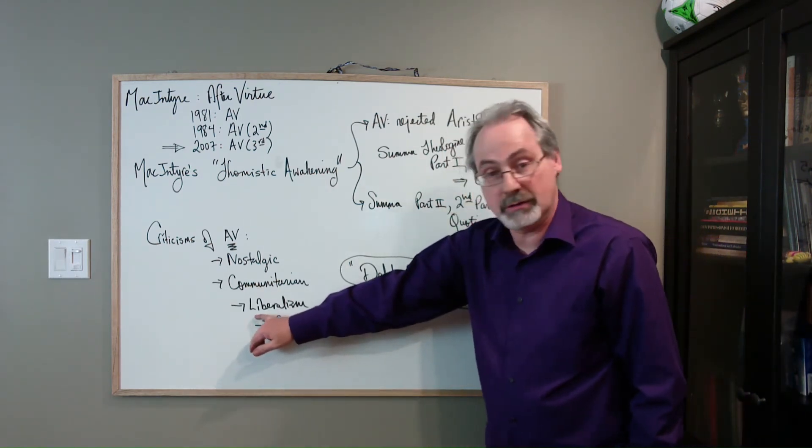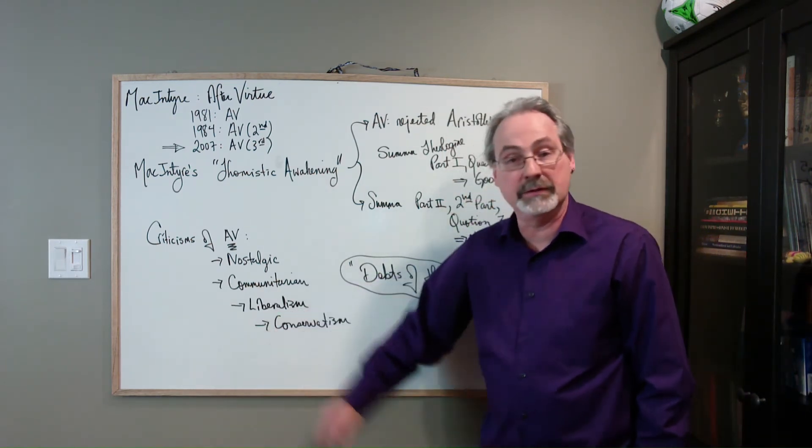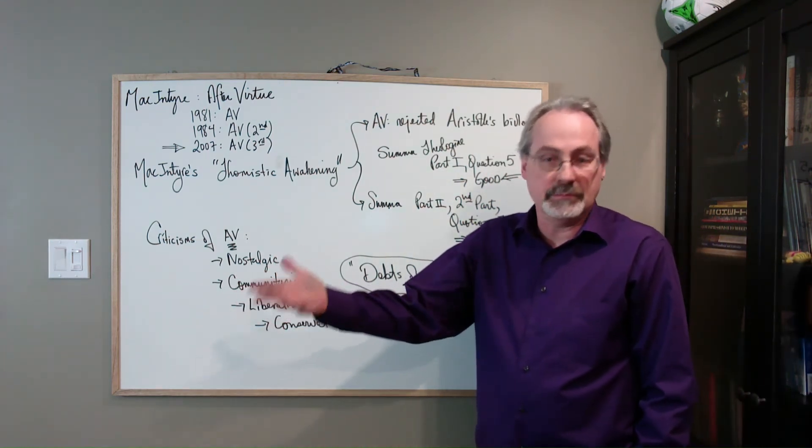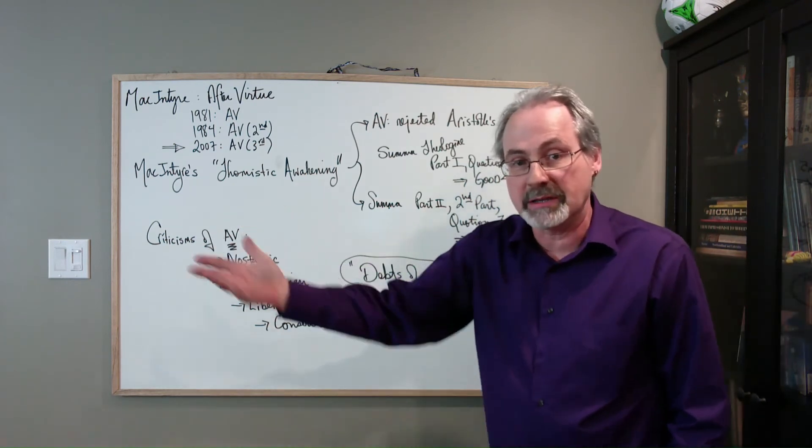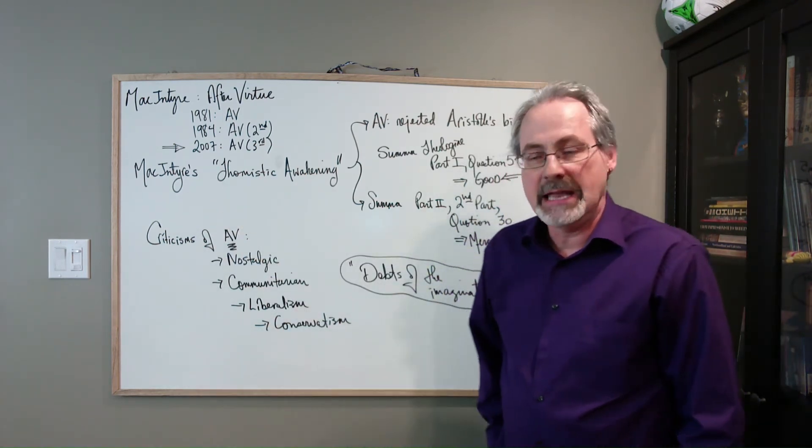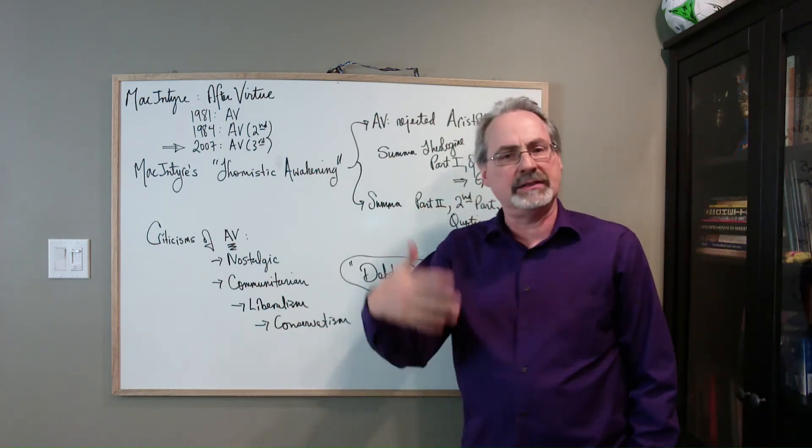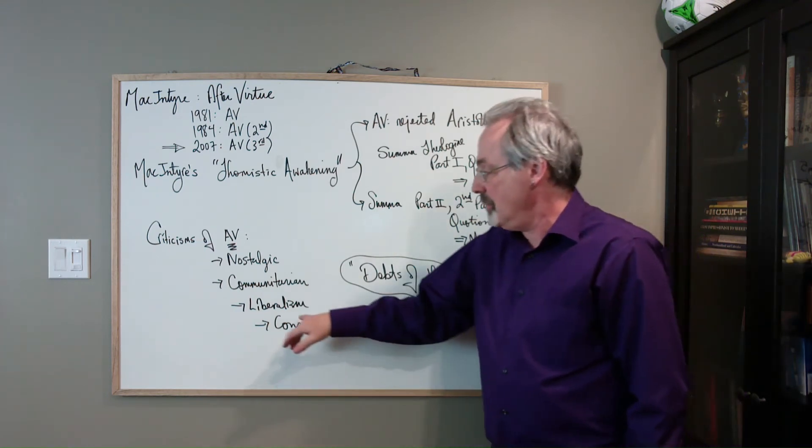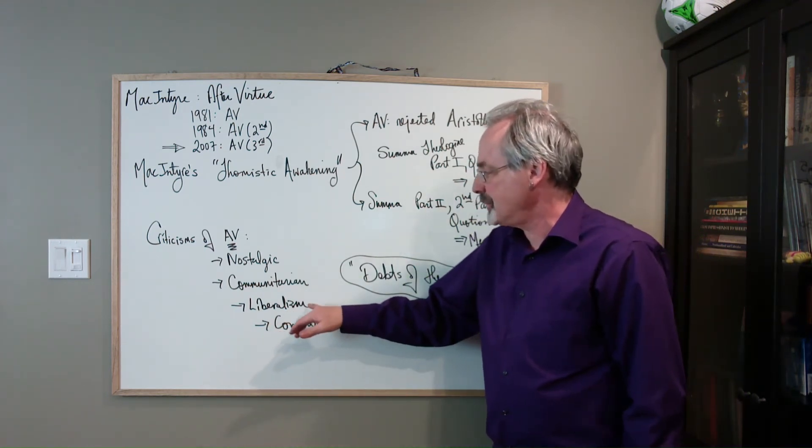MacIntyre analyzes where some people accused him or said his critique of liberalism meant he was ultimately a communitarian. He denies that. MacIntyre does not think that all communities are intrinsically good. He says lots of communities are terrible, they're oppressive. Community for the sake of community, I'm not a communitarian.